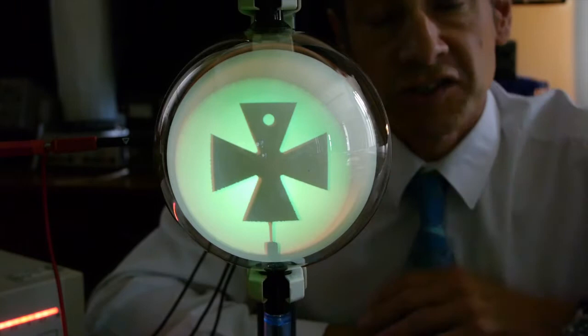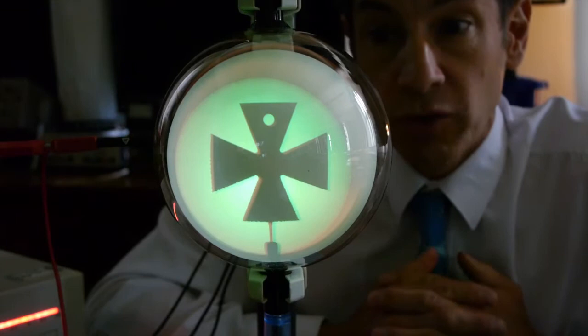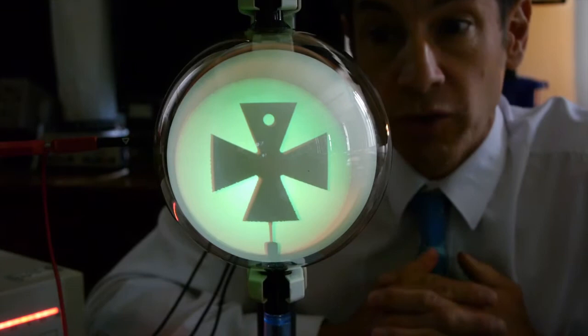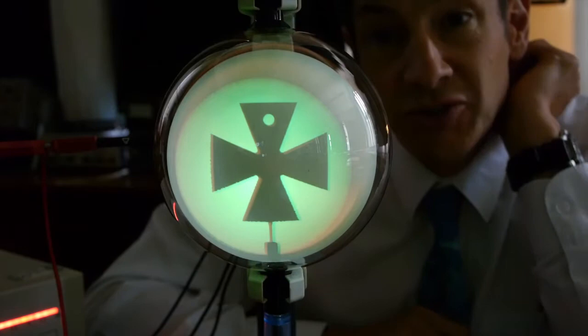Now, Crookes would have seen the glass glowing, so he would have had to have done it in a very dark room. We've got a zinc sulfide fluorescent screen on the front of this tube, and that gives out light when electrons with high energy hit it. It gives out photons of light and therefore you can see the shadow of the Maltese cross.